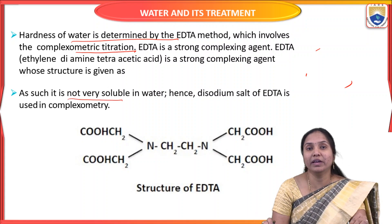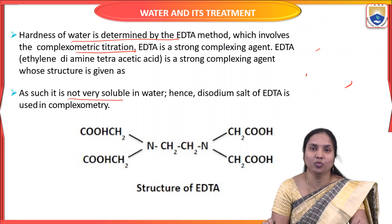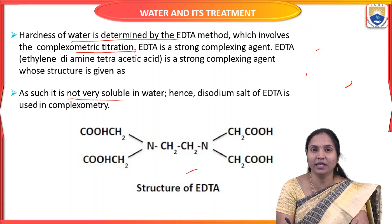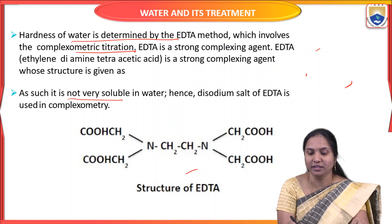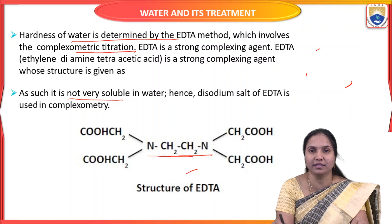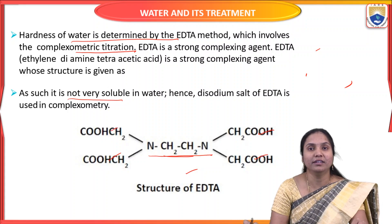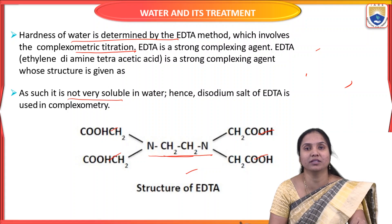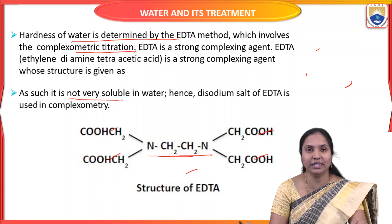EDTA is less soluble in water. Its full name is Ethylenediamine Tetraacetic Acid. The structure shows an Ethylenediamine group with 2 NH2 groups and 4 acetic acid groups. It is called a Complexing Agent because it forms complexes with hardness-causing ions.